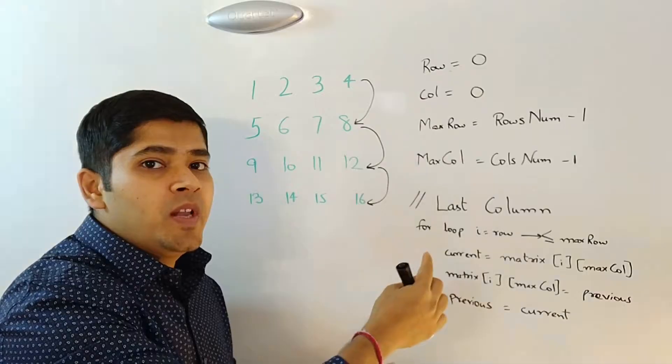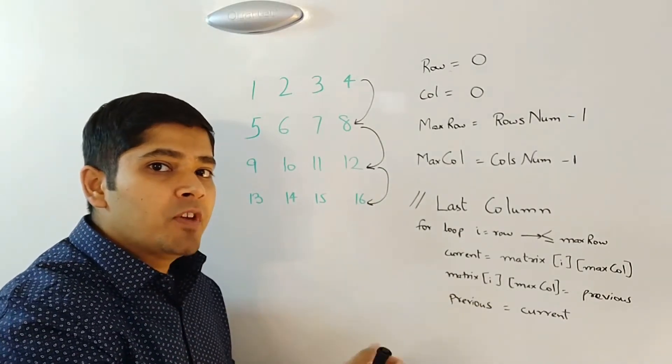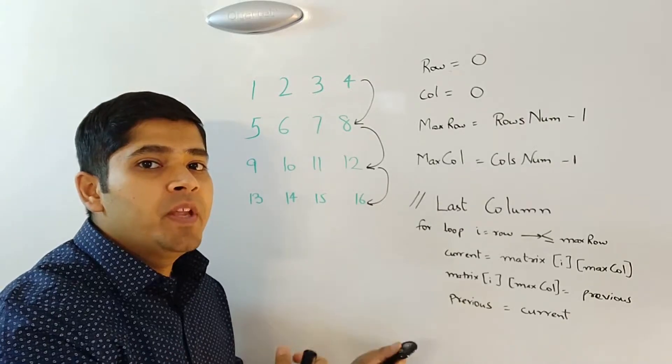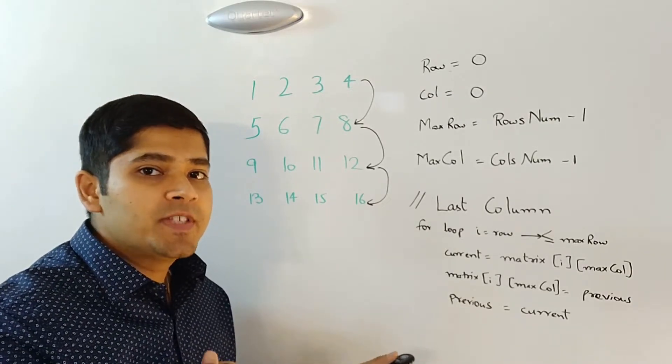8 to 12, 12 to 16, and at the end of the for loop, our variable previous will hold the value 16.